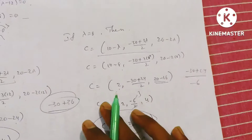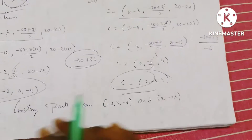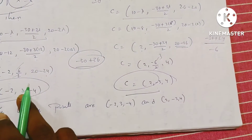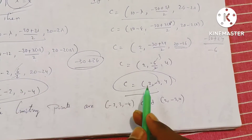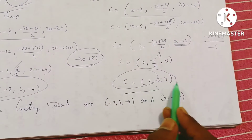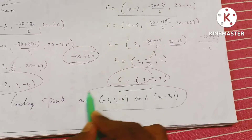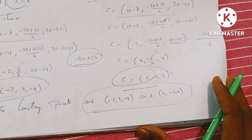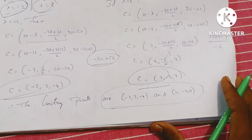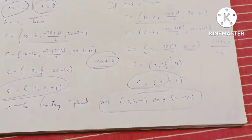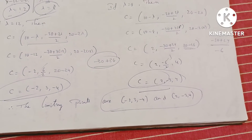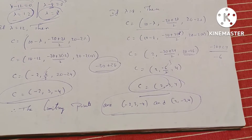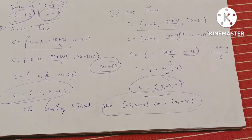Therefore, the limiting points are (−2, 3, −4) and (2, −3, 4). If you like this video, please like, share, and subscribe. If you have any doubts, please leave a comment.